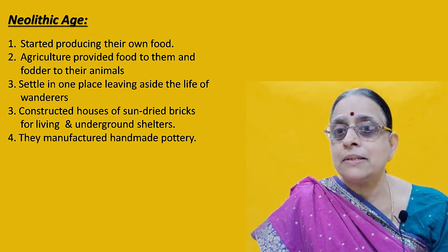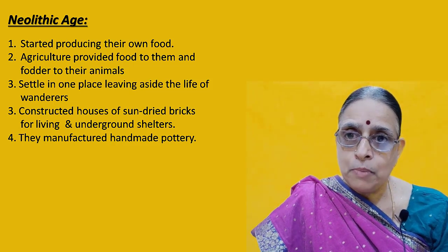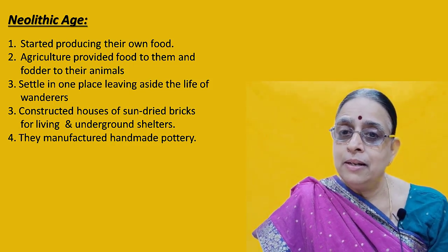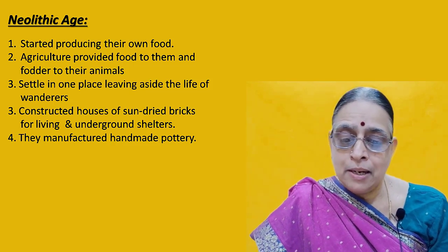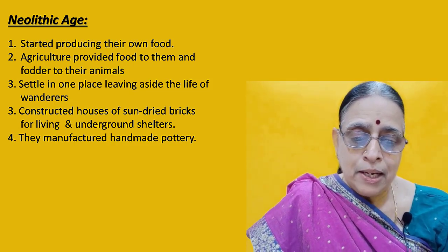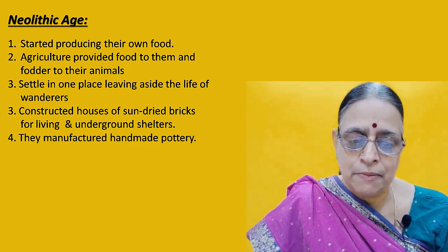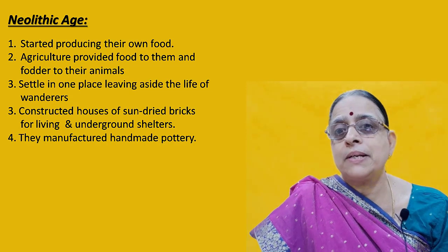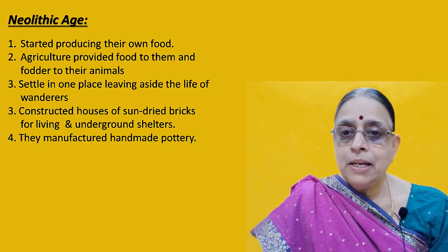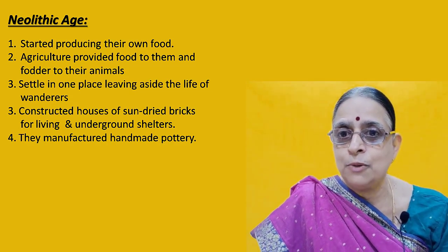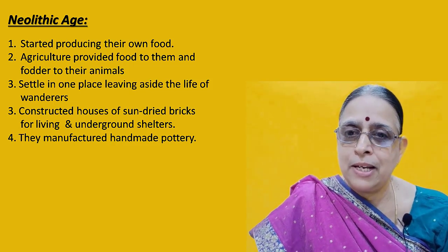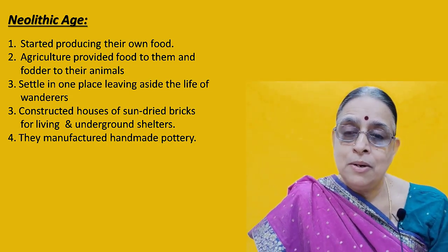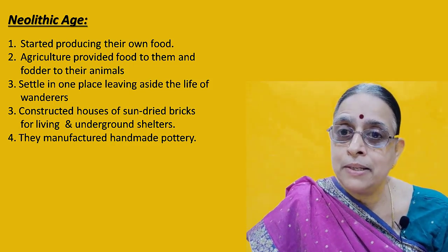Now men learned to settle in one place. During the Paleolithic and Mesolithic Ages, man was wandering from place to place in search of water, food, and shelter. Now he began to settle in one place because he had animals with him and agriculture flourished. There are evidences showing that men cultivated on the banks of rivers. He used sun-dried bricks and began to build houses, making bricks out of alluvial soil formed on the riverbank. Underground shelters were also made by them, showing how much development took place.